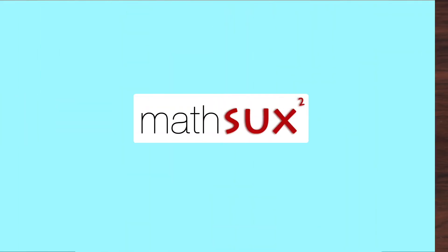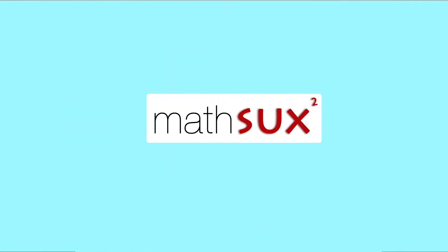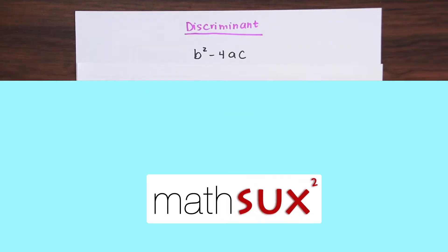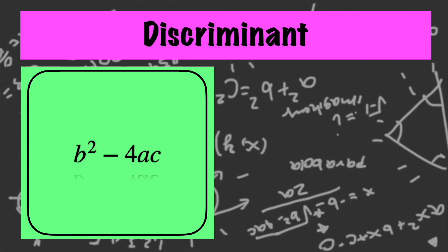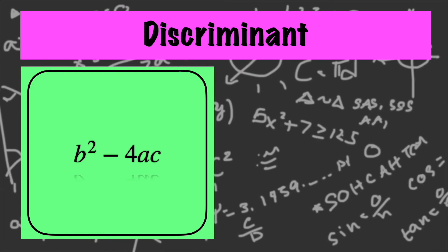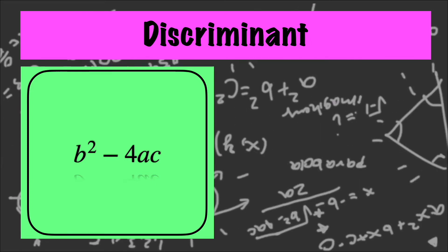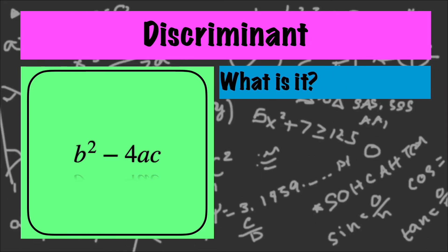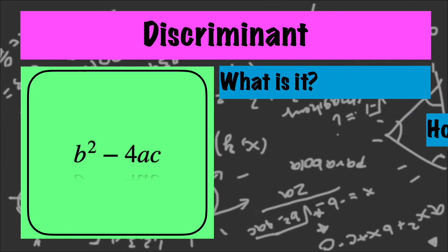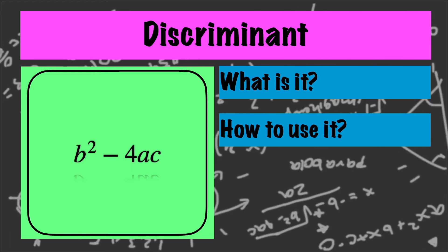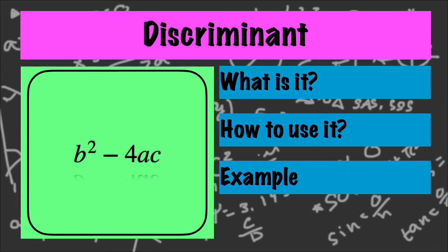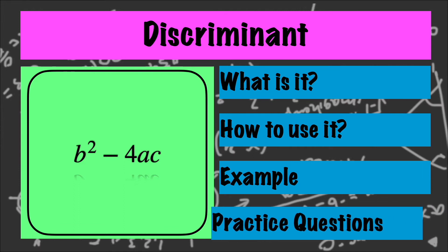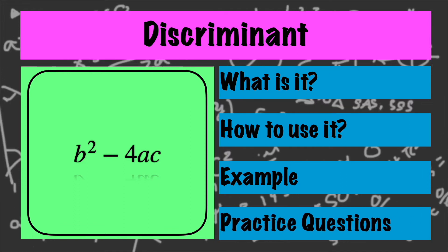Hi everyone and welcome to Math Sucks. This video is going to help you pass algebra. We're going to use the discriminant to determine the number of solutions of a quadratic equation — first by going over what the discriminant is and what it tells us, then how to use the formula. Finally, we'll look at an example and then you can try the practice questions at the end of this video.